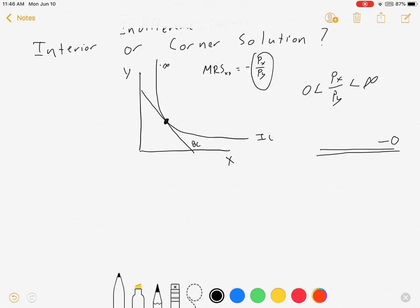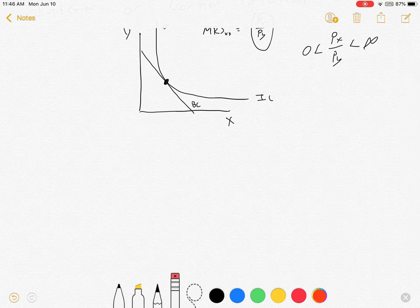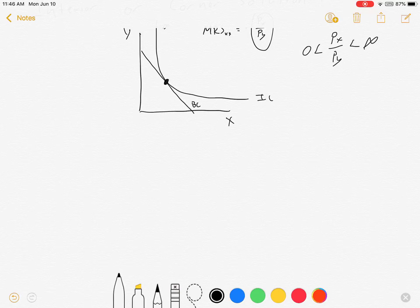Great. Now, let's talk about a utility function where we might not have that, because I told you this is by assumption. I've assumed that it never touches either axis, so let's see what happens if it does. Let's look at a situation now where our indifference curves look something like this.